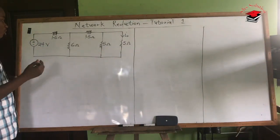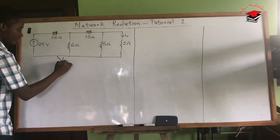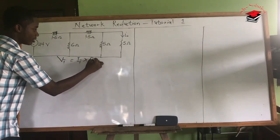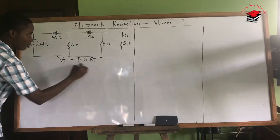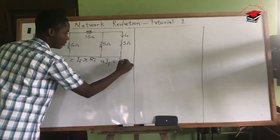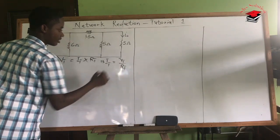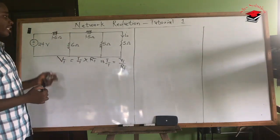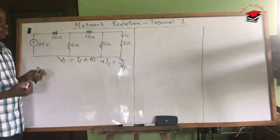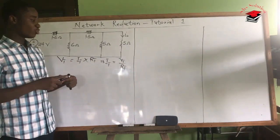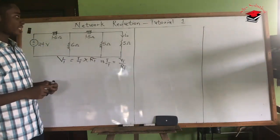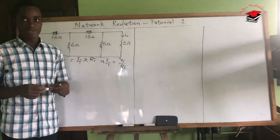From Ohm's Law we know that total voltage VT is given by the total current multiplied by the total resistance. So total current IT is equal to the total voltage over total resistance. In this circuit we are given the total voltage to be 24 volts, so we need to calculate for the total resistance.